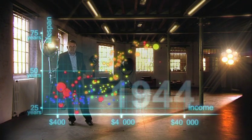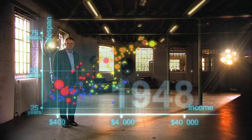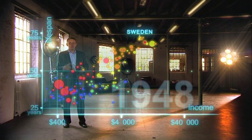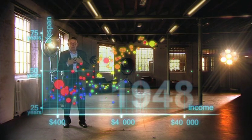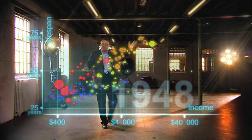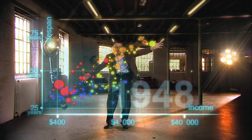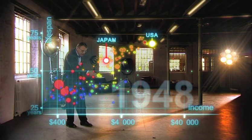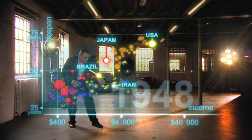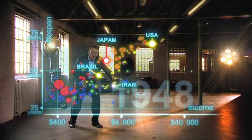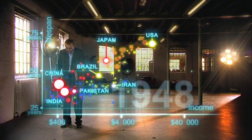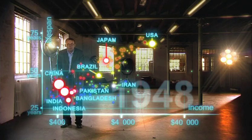Now, after the tragedies of the Second World War, we stop a bit to look at the world in 1948. 1948 was a great year — the war was over, Sweden topped the medal table at the Winter Olympics, and I was born. But the differences between the countries of the world was wider than ever. United States was in the front, Japan was catching up, Brazil was way behind. Iran was getting a little richer from oil, but still had short lives. And the Asian giants — China, India, Pakistan, Bangladesh, and Indonesia — they were still poor and sick down here.